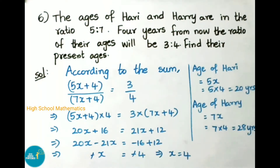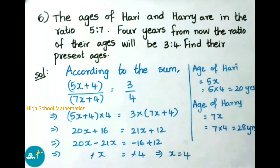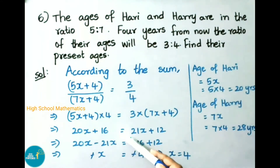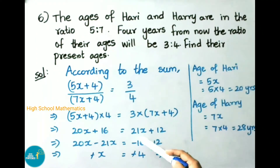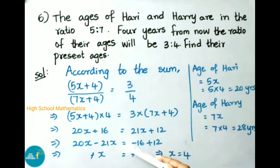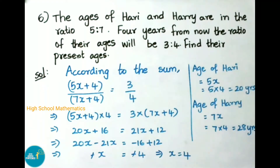Now we have to do cross multiplication: (5x + 4) × 4 = 3 × (7x + 4). That implies 20x + 16 = 21x + 12. That implies 20x, and on transposing 21x becomes minus 21x, equals 16 on transposing minus 16 plus 12. That implies 20x - 21x = -x = -16 + 12 = -4. Minus and minus cancel on both sides. Therefore x = 4.